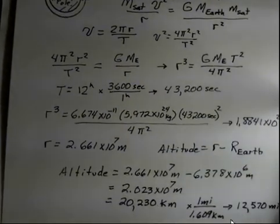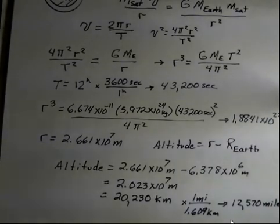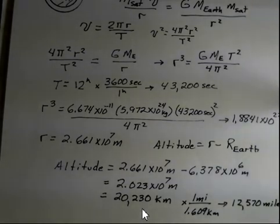And again, along the way here, pause the video and use your calculator to verify these numbers. So the altitude is going to be, here's the r value we found for the orbit. This number is from the center of the Earth to the orbit. This number is from the center of the Earth to the surface of the Earth, 6.378×10⁶ meters. So subtracting, we get 20,230 kilometers.